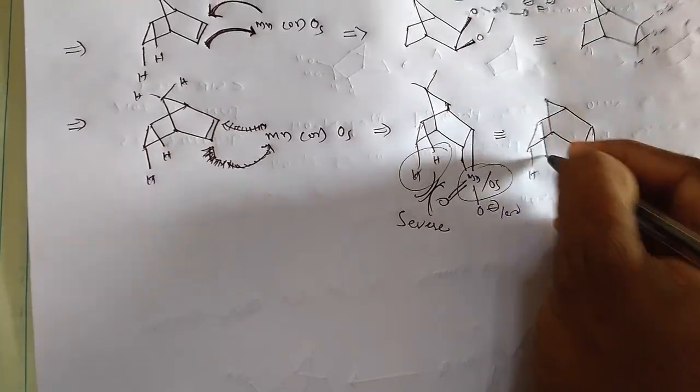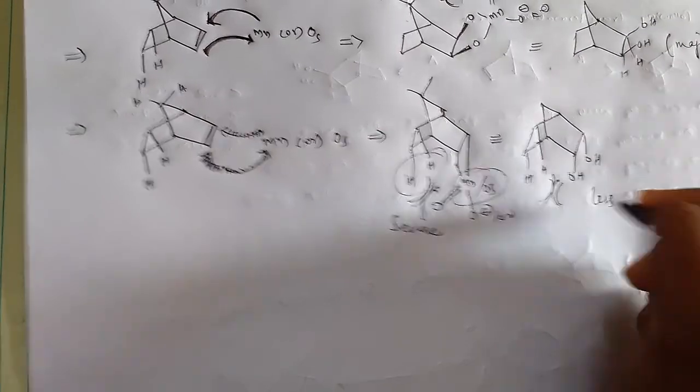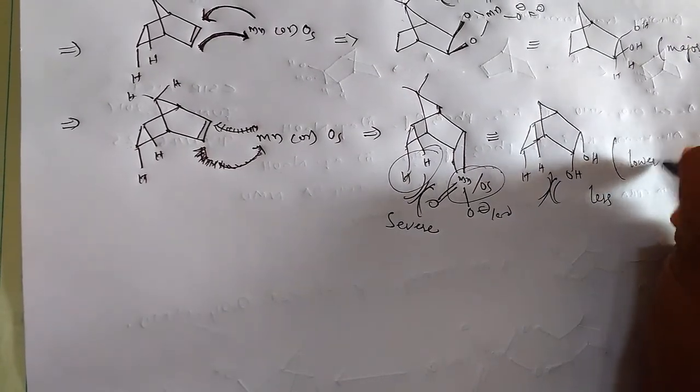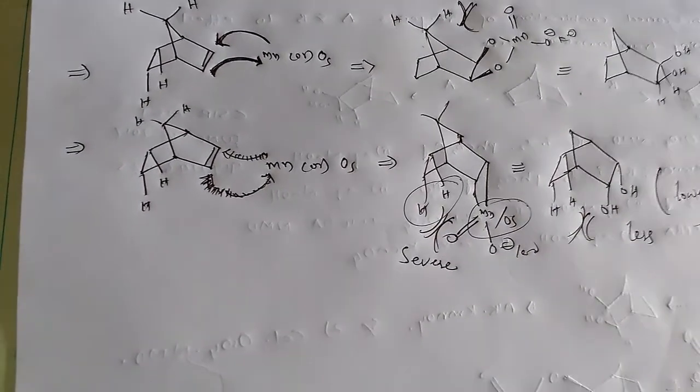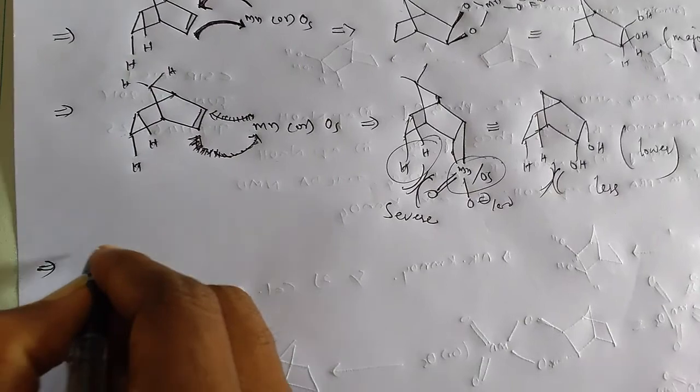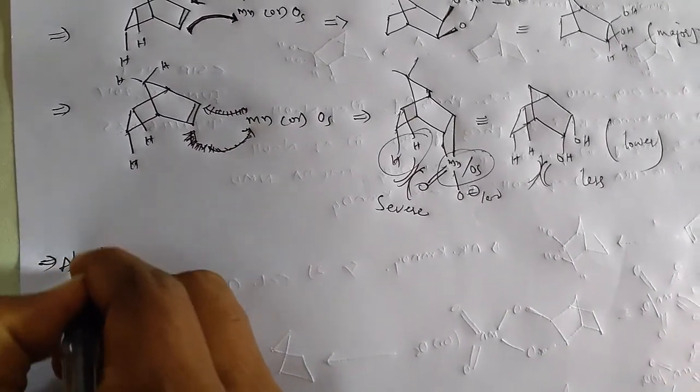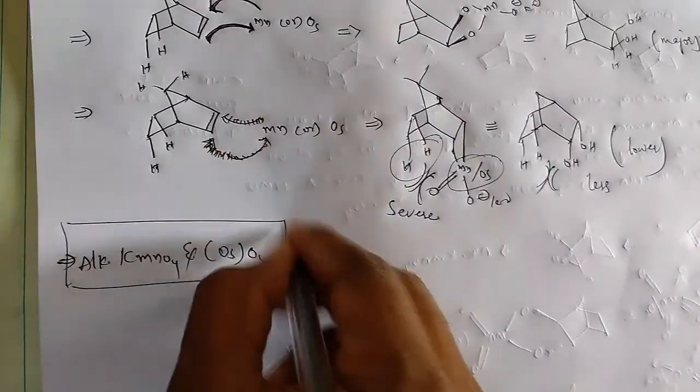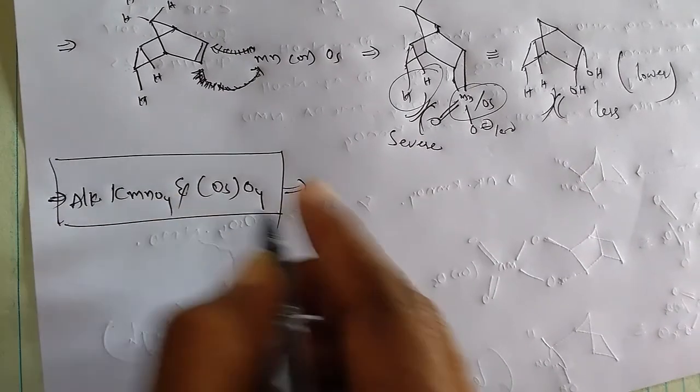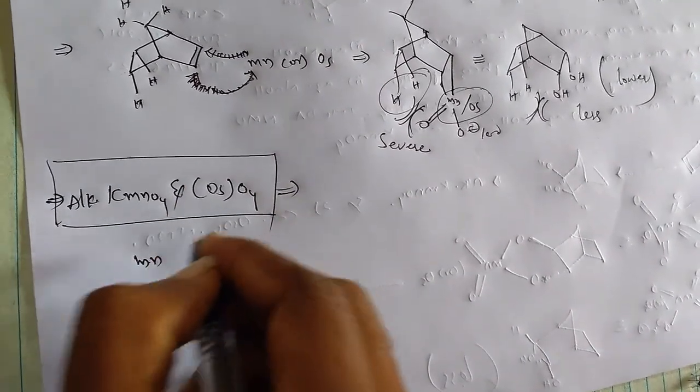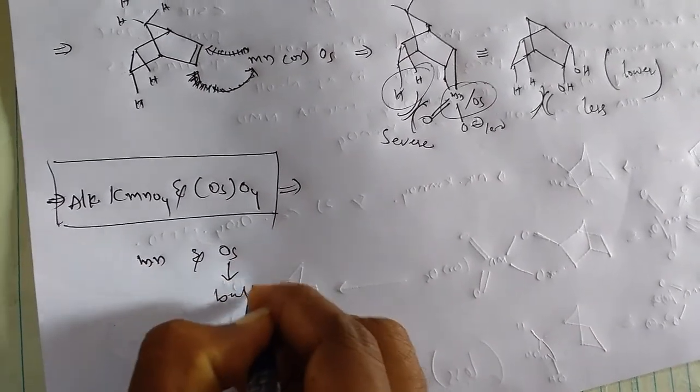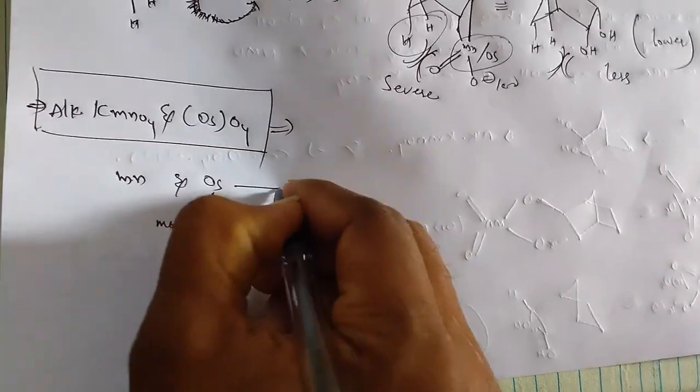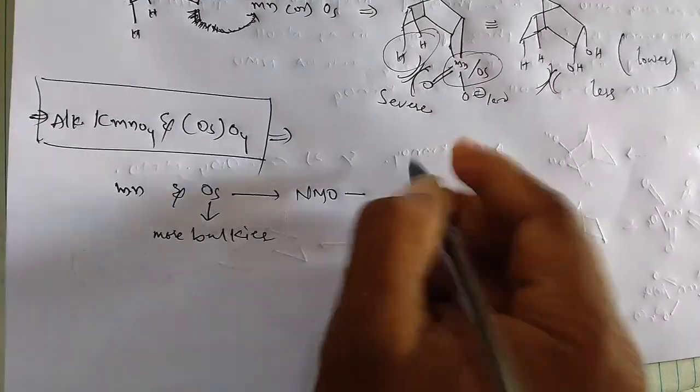After getting this product, it is less stable because of the steric repulsions, and it is lower in percentage. Then, if you compare between potassium KMnO4 and osmium tetroxide, which one is a better reagent in the given options? When you compare manganese with osmium, osmium is more bulkier and is used as a co-oxidant.